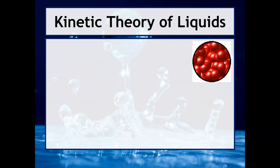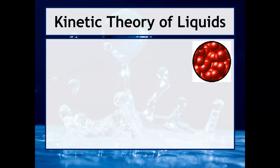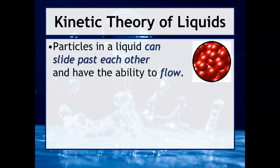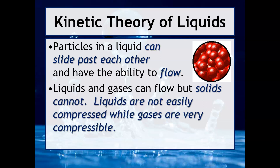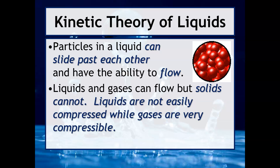What you see on the right-hand side is a particle model of what liquids do on the particulate level. Particles in a liquid often have enough space so that they can slide past each other — we say that liquids have the ability to flow. Both liquids and gases share this property; however, solids cannot.